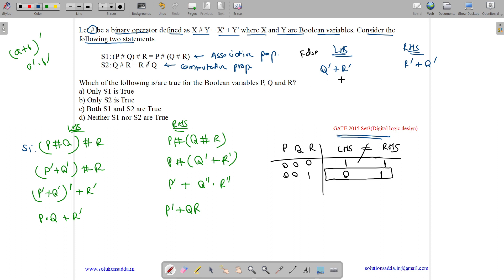Now plus is always commutative, so we can write this as R' plus Q', and this equals R' plus Q', so LHS equals RHS. Therefore S2 is true, S1 is false, so only S2 is true. The correct answer is option B: only S2 is true.